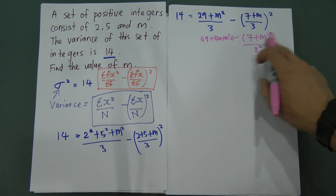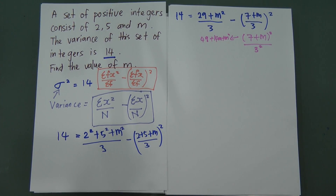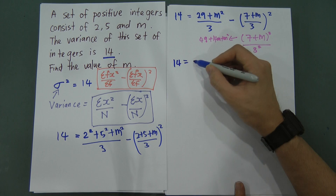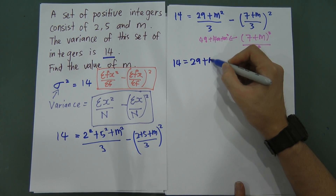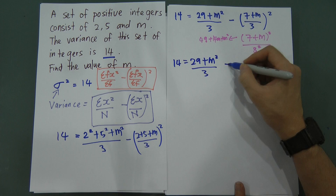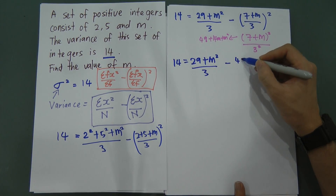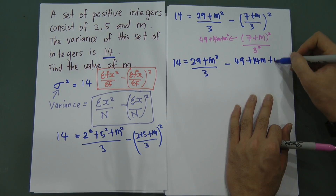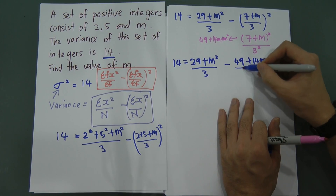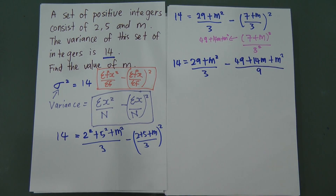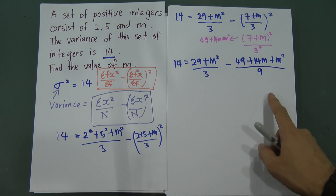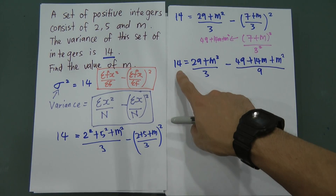So rewriting everything: 14 = (29 + M²) / 3 − (49 + 14M + M²) / 9. To solve this equation, the easiest approach is to multiply everything by 9 to eliminate the fractions.